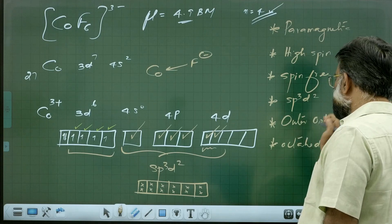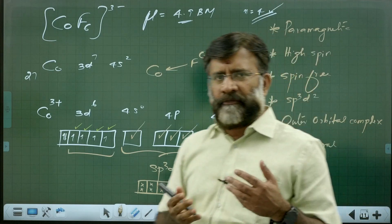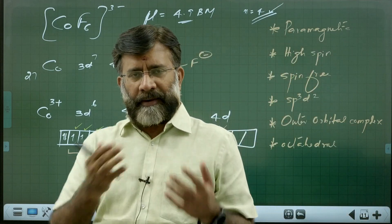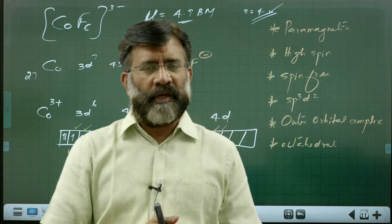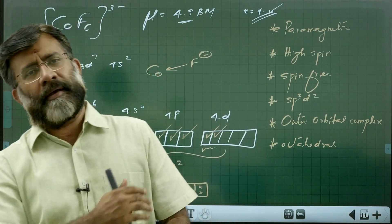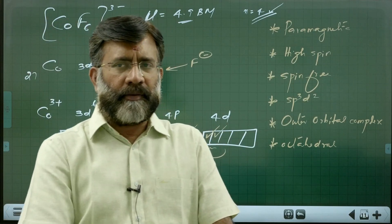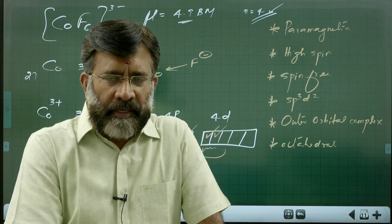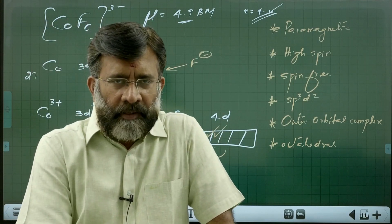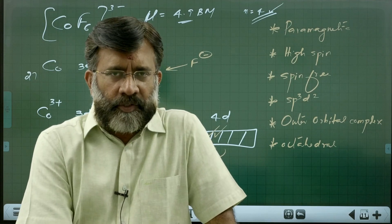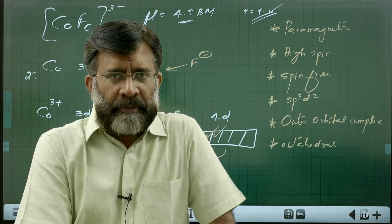The hybridization is SP3D2, involving the outer 4D orbital, so it is called an outer orbital complex. Comparing the two: hexamine cobalt is inner orbital, low spin, spin paired, diamagnetic, D2SP3 hybridization; hexafluoridocobalt is outer orbital, high spin, spin free, paramagnetic, SP3D2 hybridization. Both are octahedral systems. VB theory enables this kind of characterization and comparison in complexes.